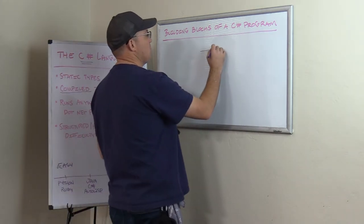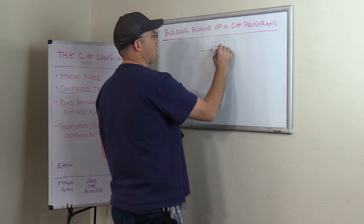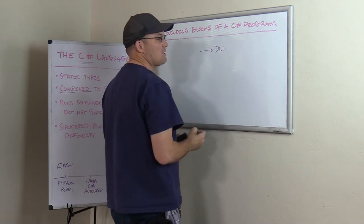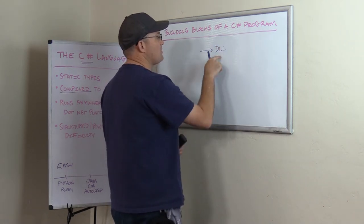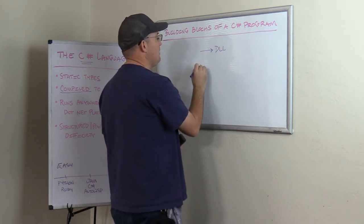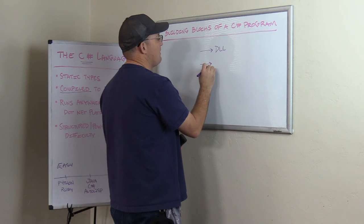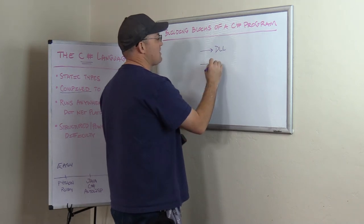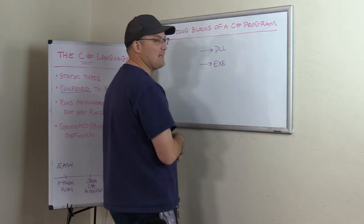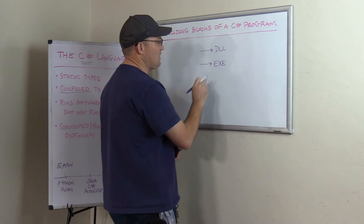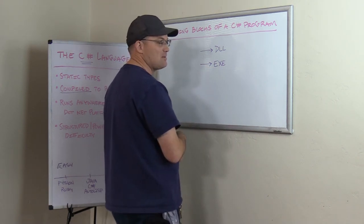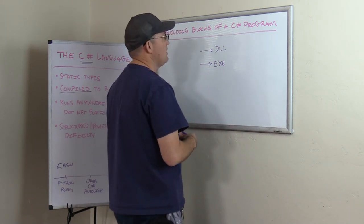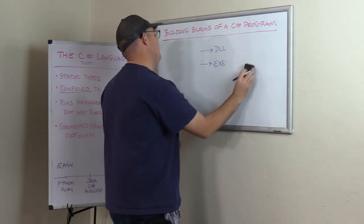When you're done writing your C# program, you compile it and bundle it up. You get one of two things: if it's a software library to be used by other programs, it's called a DLL; if it's a program that actually executes on the computer to do something, it's a .exe — and you've probably run .exe files on your Windows computer all the time.